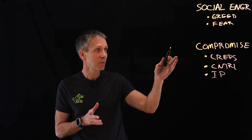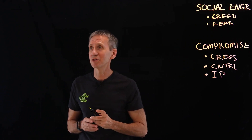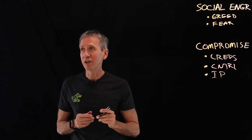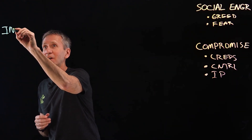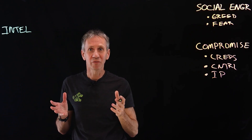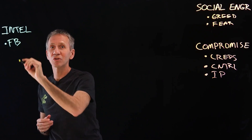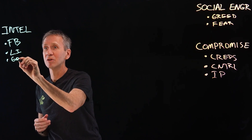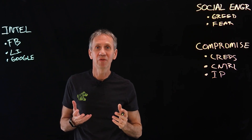In our first scenario, we're going to compromise credentials — that is the user ID and password you use to log into a system. Something that makes for a successful social engineering attack is if you've done your homework in advance: you've gathered intelligence and done research on your victim. You might look at places like social media, Facebook, LinkedIn, Google, to find out as much as you can about your intended victim.